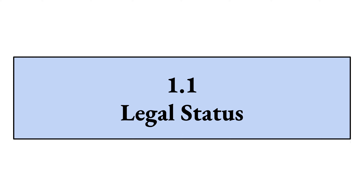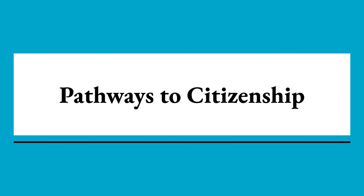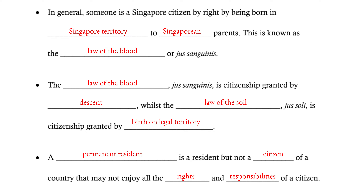The first aspect of citizenship is what we call legal status — basically the lawful way of calling yourself a citizen. We're going to look at how a person can get citizenship in Singapore. Generally, if you are born in Singapore to two Singaporean parents, you are a Singapore citizen by right. This right comes from the law of the blood, or in Latin, jus sanguinis — the idea that you are born in the territory to parents who are citizens of this nation, so you automatically get citizenship.